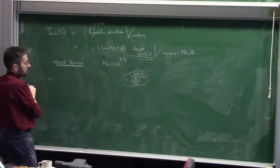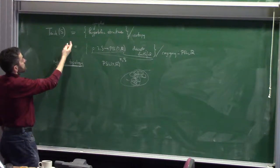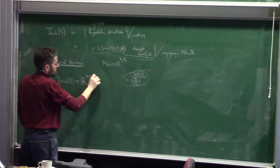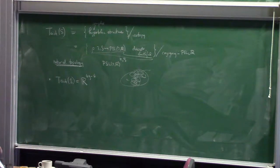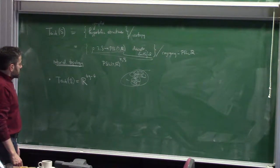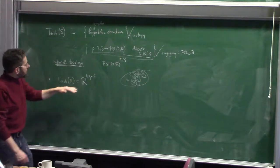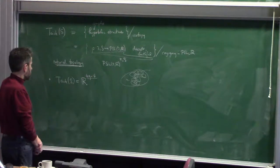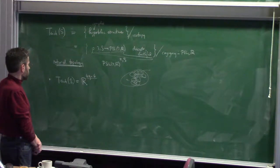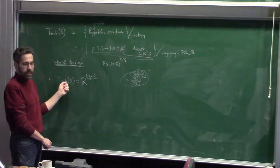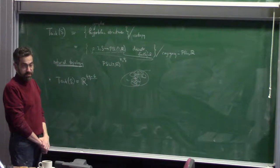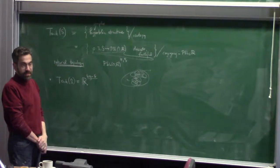The two things to say about the topology: first of all, we know exactly what this is as a topological space — it's just a finite-dimensional cell whose dimension is given by the complexity of the surface. Let me convince you that you could figure out this dimension. Riemann figured out the dimension, though Teichmüller space as such was a little — actually quite a bit — after Riemann. The dimension itself is Riemann's result.